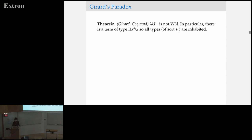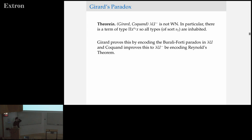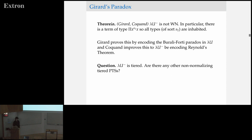The thing that makes this interesting is that we have Girard's paradox, which tells us that lambda U minus is not weakly normalizing — so we have a proof of false in the system. This is proved by encoding Burali-Forti, lambda U, or Reynolds' theorem. A natural question we can ask is: lambda U minus is one of these tiered systems, so are there any other non-normalizing tiered pure type systems? It's kind of interesting that we haven't been able to come up with any other pure type systems with this non-normalization property, which makes the question of whether or not the conjecture holds very tricky.